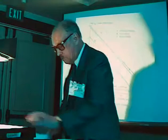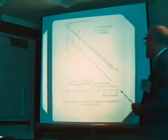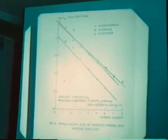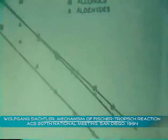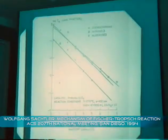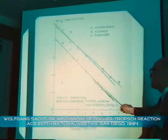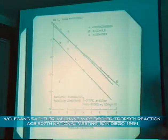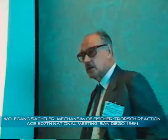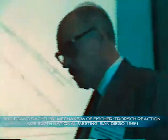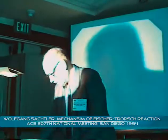Why do we believe this? There are basically two arguments. If you use rhodium-manganese at pressures in the order of 100 bar, then you can get oxygenates up to C6 and C7. And if you plot the Schultz-Flory lines for the oxygenates and for the hydrocarbons, then the two lines are basically parallel. That strongly suggests that the chain growth is the same for all these compounds — only the termination decides which product is formed.